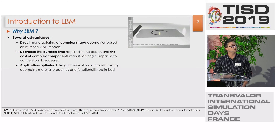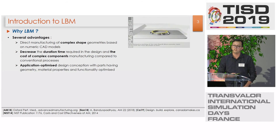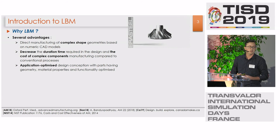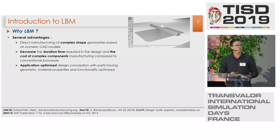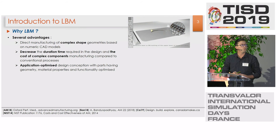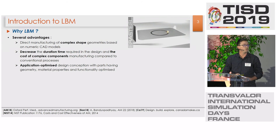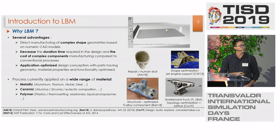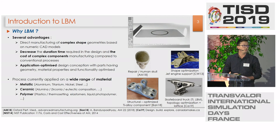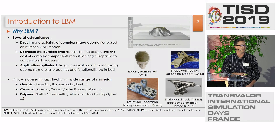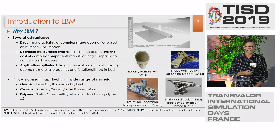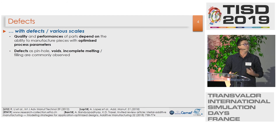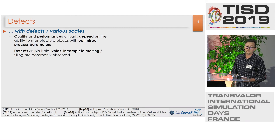So why are we interested in this process? Because complex shapes with complex geometries are easier to manufacture with this kind of process, contrary to casting for instance. We can decrease the duration time and the cost of complex components with functionality optimization. This process is currently applied on a wide range of materials, for instance metallic materials such as titanium or nickel super-based alloys, ceramics, polymers, and so on. However, quality and performance of parts are highly dependent on the ability to control the process parameters.